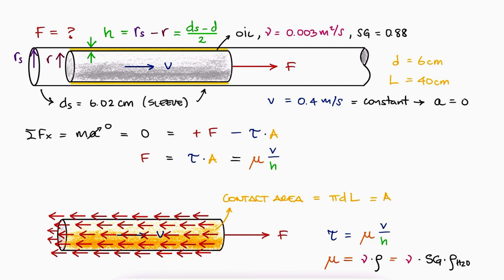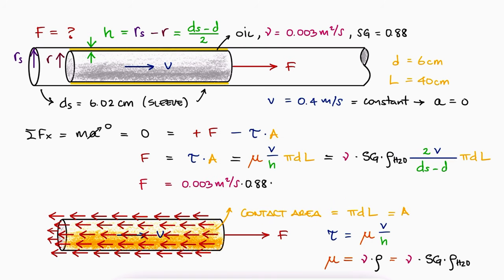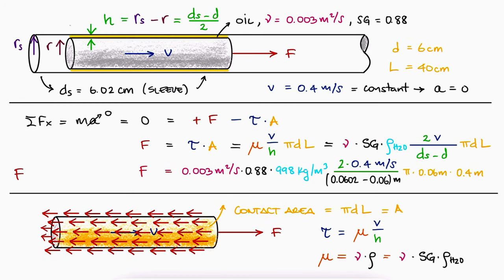We substitute the shear stress, the area, the dynamic viscosity, and the thickness of the film. We now substitute the values, and we find that the force is approximately 795 newtons.